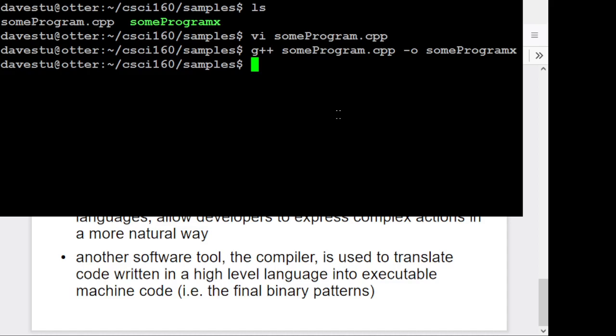So this has gone through, read that high level language code, and it's stored the result in this file named some program X. So that's the one that's got all that binary in it, all the zeros and ones. So now we can try and run that particular program. And it does our hello and goodbye.